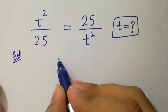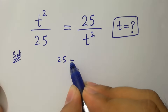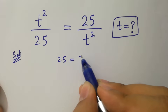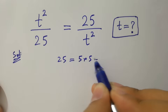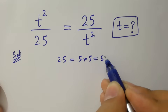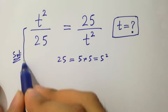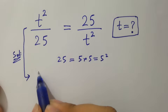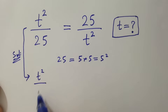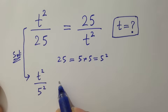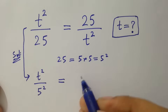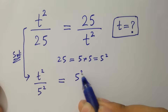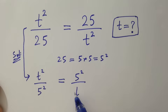Since 25 equals 5 times 5, which is 5 squared, then it will be t squared over 5 squared equal to 5 squared over t squared.